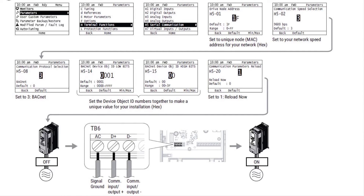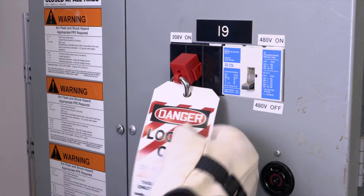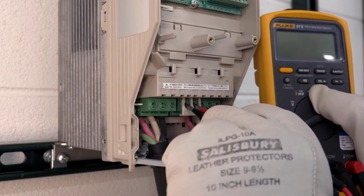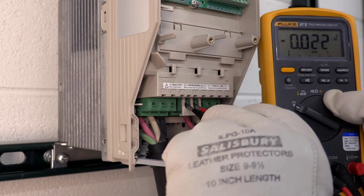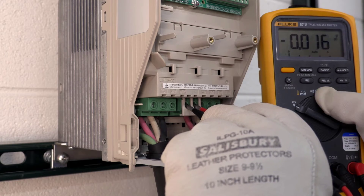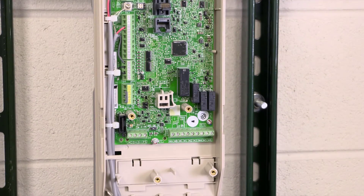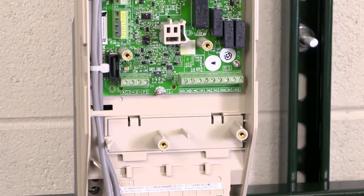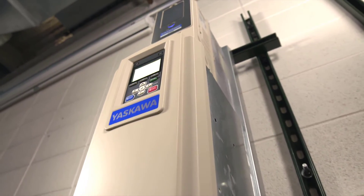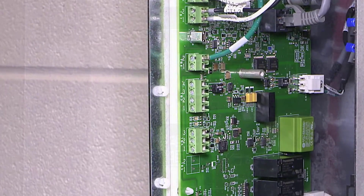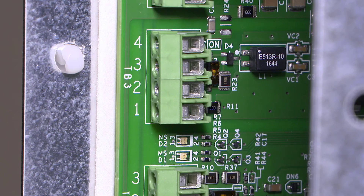Wiring is made easy whether you're using an HV600 drive or bypass. Confirm that all power sources are turned off, all devices are discharged, and you have performed the correct lockout/tagout procedure before doing any wiring. When wiring a drive, locate the TB6 terminal block on the drive control board. If you are setting up a bypass, locate the bypass control board and use the TB3 terminal block.